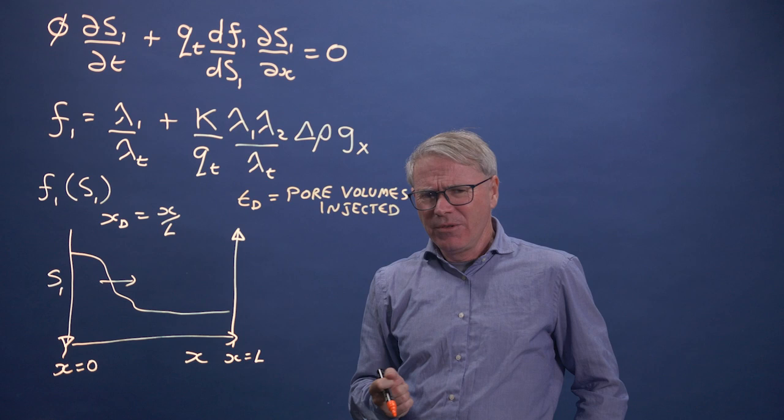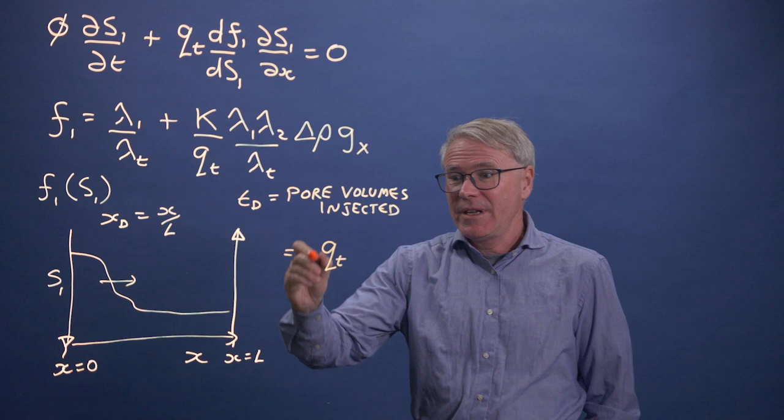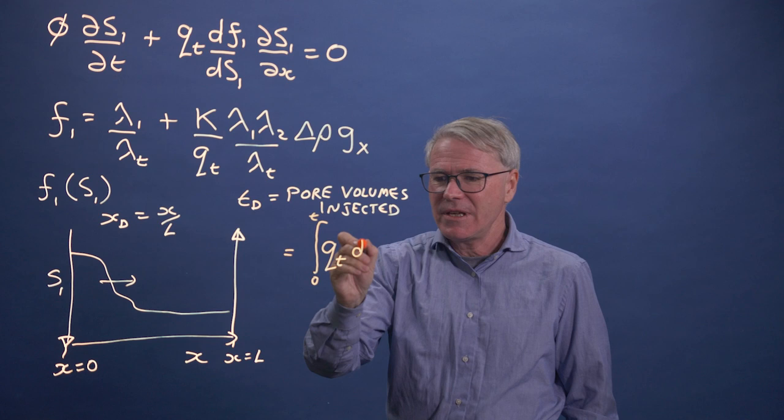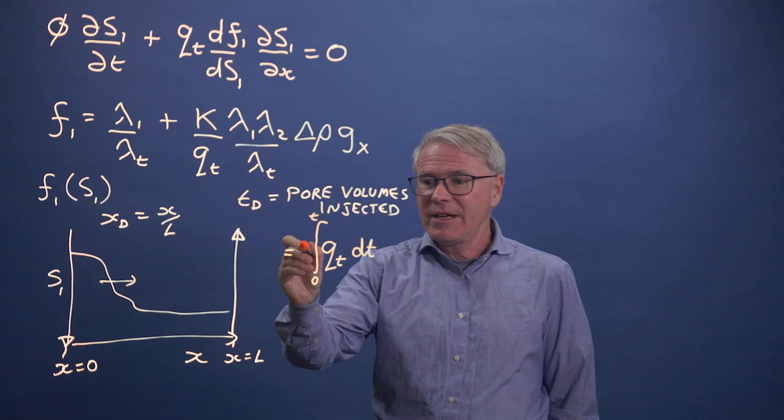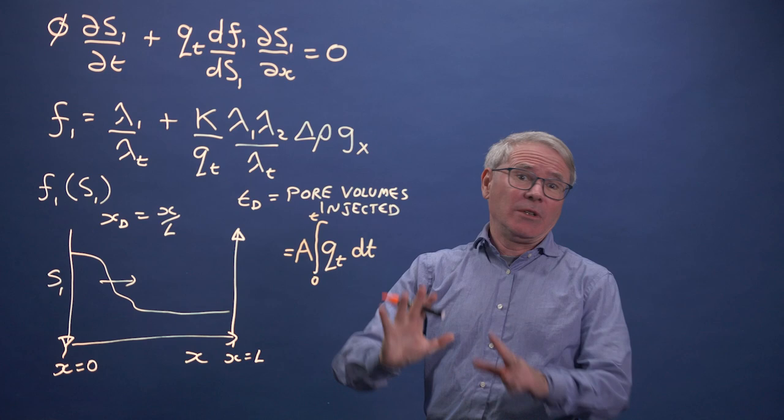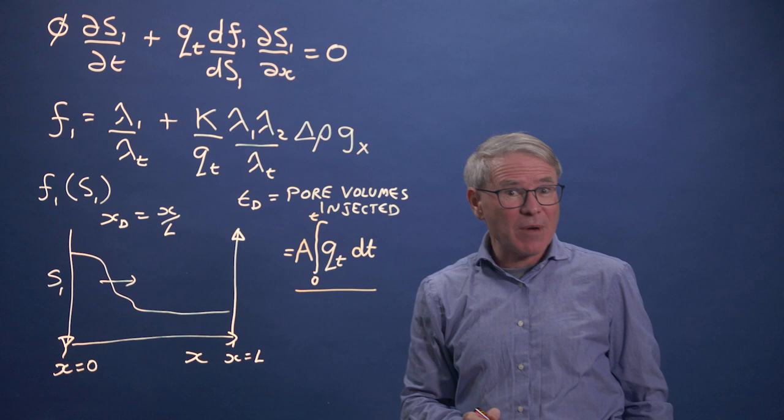What that means is, if TD is one, I've injected enough of phase one, enough water, that it could fill the entire pore space. I'm injecting at a rate QT. The integral of QT over time DT - QT is the volume of fluid injected per unit area per unit time. Integrate over time, it's the volume injected per unit area. Multiply by a cross-sectional area A, that's a volume. So that's the volume I've injected.